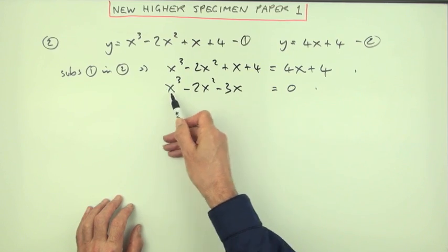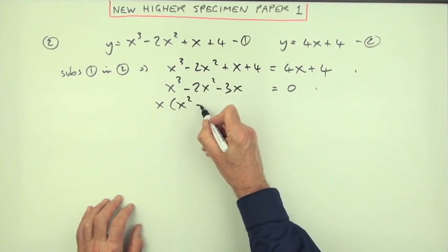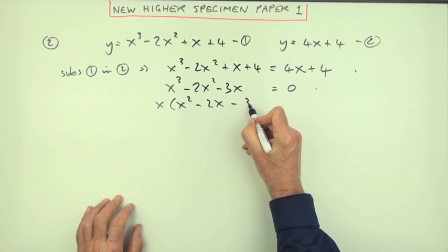Now factorize it. Nicely there's a common factor - always look for common factors first of all. So taking out an x, that'll drop to x², that will drop to 2x, and that will drop to 3.